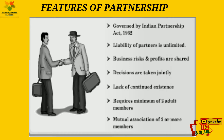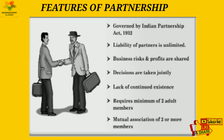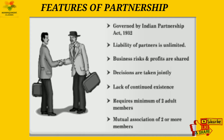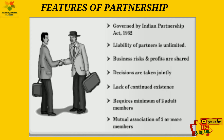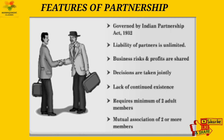Decisions in a partnership are jointly taken — unlike in a sole proprietorship, decisions aren't made by just one person. Partners A, B, and C all have mutual concerns and make decisions together. Another feature is lack of continued existence: if a partner faces death, business loss, or insolvency, the business may need to close. However, if remaining partners agree to continue, they can form a new partnership agreement.